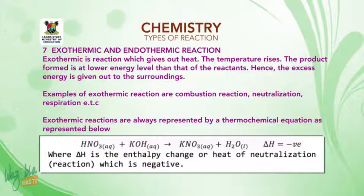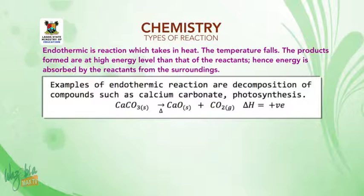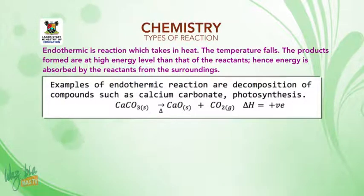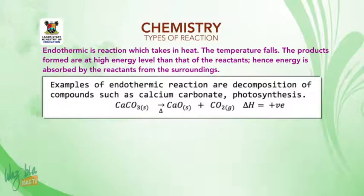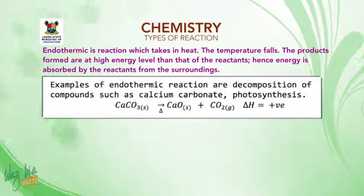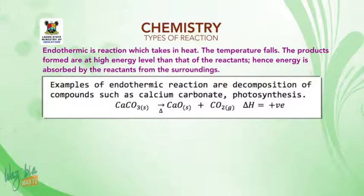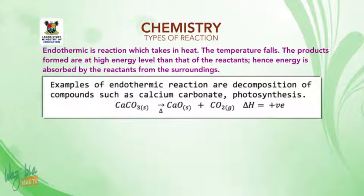Endothermic reaction is a reaction which takes in heat. The products form at a higher energy level than that of the reactants, so energy is absorbed by the reactants from the surroundings. Examples of endothermic reactions are the decomposition of compounds such as calcium carbonate, or photosynthesis. For example: calcium carbonate → calcium oxide + CO₂, ΔH positive.